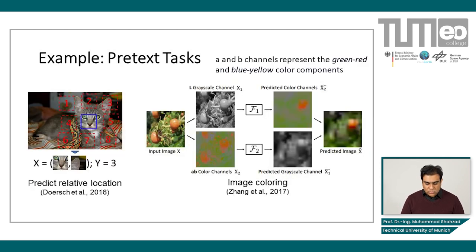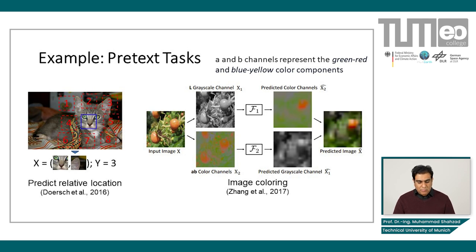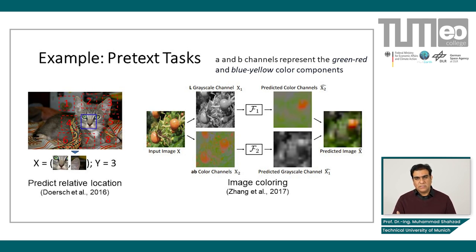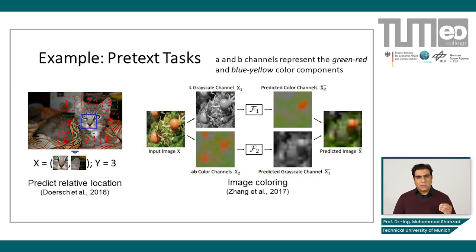Another example is a pretext task of predicting relative position. Here, we divide the image into patches, and along with the center patch, we also give the patch to be predicted. The label is actually the patch location. It's similar to the previous one, but there we are predicting the index of the permutation, whereas here we are directly referring to the patch itself.